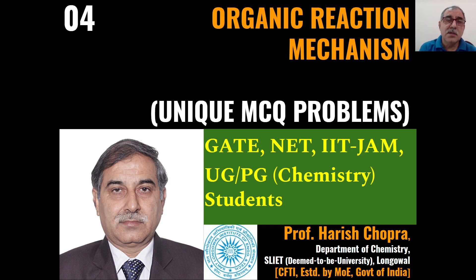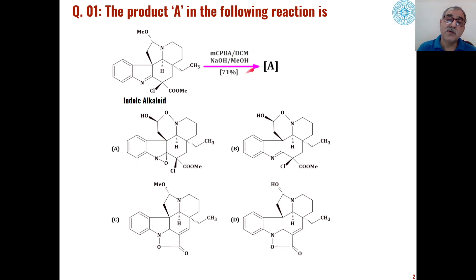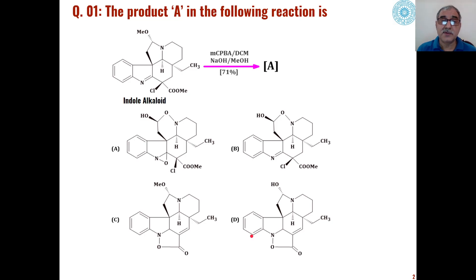Dear students, this is our fourth lecture on multiple choice question problems based on organic reaction mechanism. We will again discuss five problems. The first of these problems is based on indole alkaloids — when indole alkaloids are reacted with meta-chloroperbenzoic acid in dichloromethane as a solvent, followed by basic hydrolysis in methanol. The product is formed in 71% yield and you have to identify which of the four choices is the product formed, and we will see the mechanism of formation of that product.